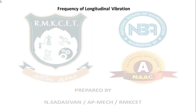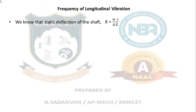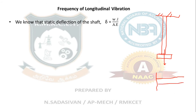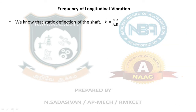Now I am going to find out the frequency of longitudinal vibration first. The static deflection of the shaft for longitudinal extension uses the formula WL/AE for a cantilever beam. If I consider the shaft oriented vertically, I can easily find out the longitudinal variation — the increase and decrease in length of the shaft is the deflection in this case. The longitudinal extension formula is δ = WL / AE.